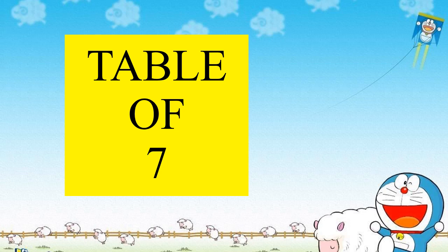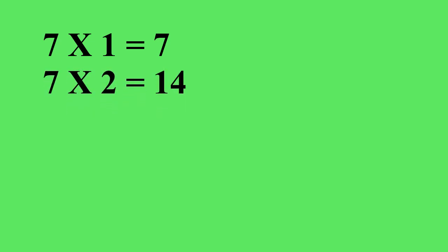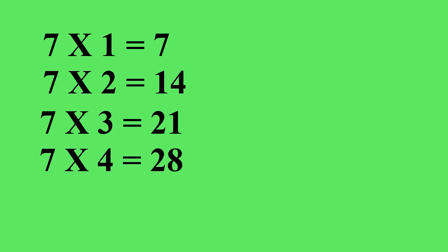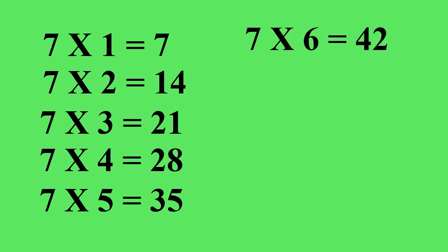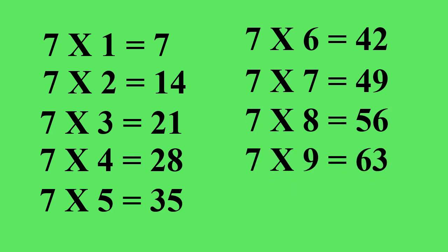Table of 7. 7 1s are 7. 7 2s are 14. 7 3s are 21. 7 4s are 28. 7 5s are 35. 7 6s are 42. 7 7s are 49. 7 8s are 56. 7 9s are 63. 7 10s are 70.